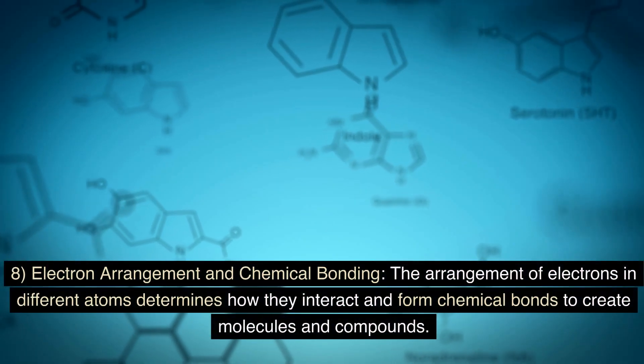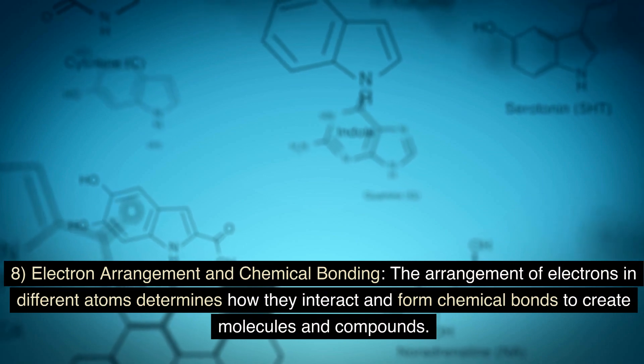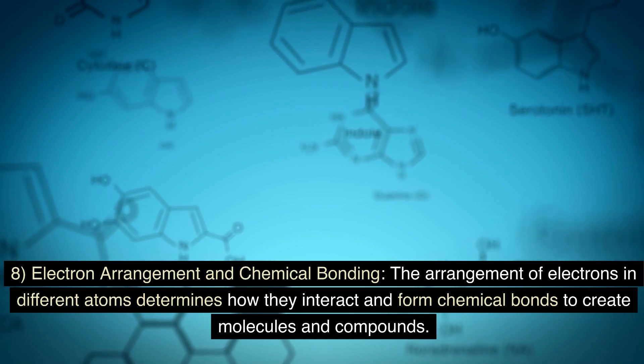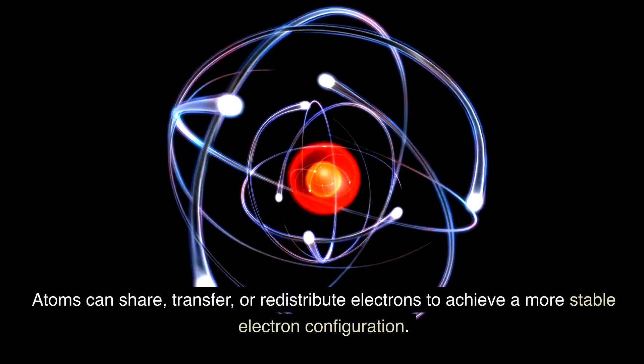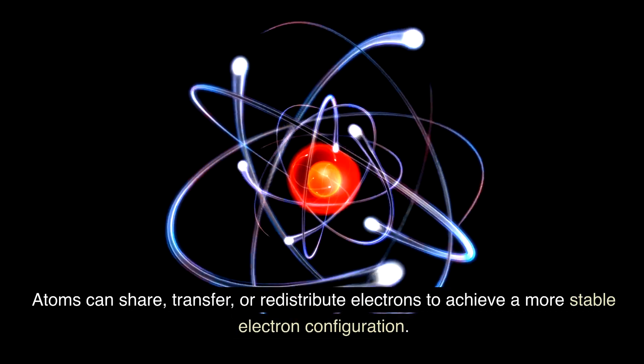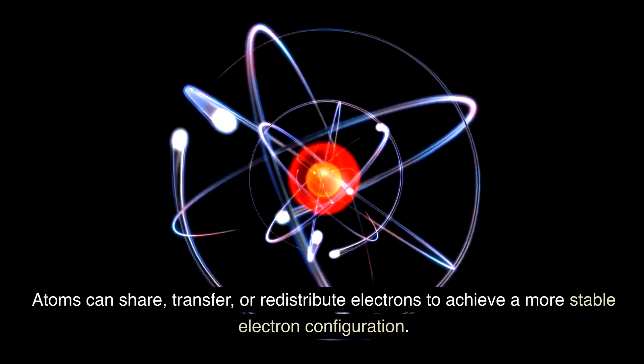Electron arrangement and chemical bonding: the arrangement of electrons in different atoms determines how they interact and form chemical bonds to create molecules and compounds. Atoms can share, transfer, or redistribute electrons to achieve a more stable electron configuration.